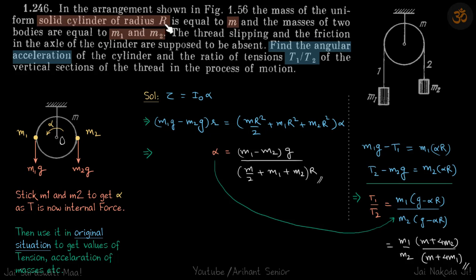We have a solid cylinder of radius r and mass small m, so the cylinder is not massless. We have two masses m1 and m2 hanging on each side. Find the angular acceleration of the cylinder and the ratio of tensions t1 by t2 of these threads.